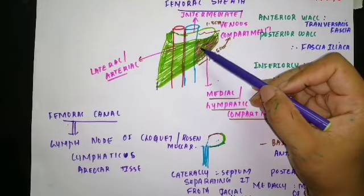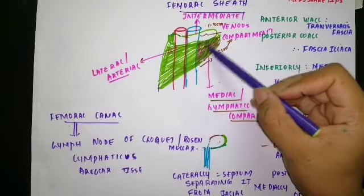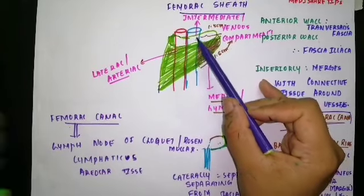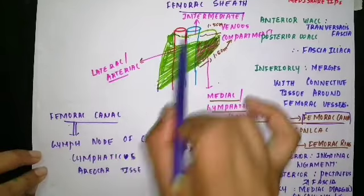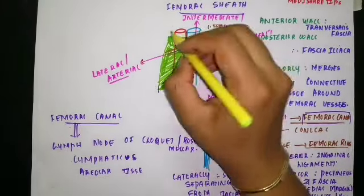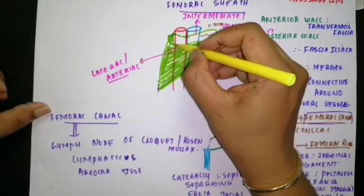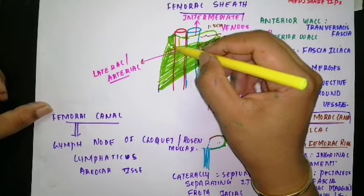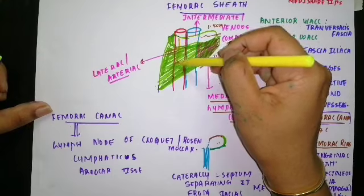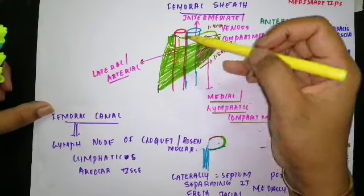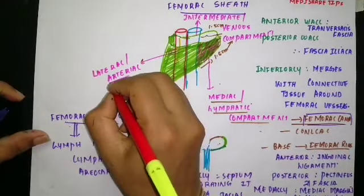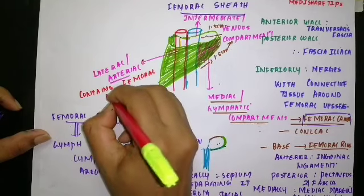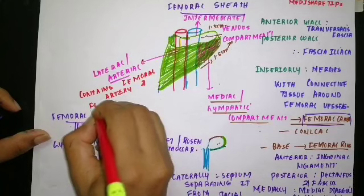To summarize the femoral sheath compartments: the intermediate or venous compartment contains only the femoral vein. The lateral compartment contains the femoral artery and, in close relation to the artery, the femoral branch of the genitofemoral nerve, which passes near to the artery and penetrates the lateral wall of the femoral sheath.